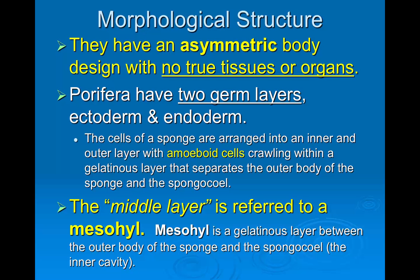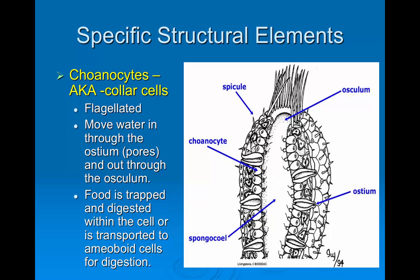The sponge body is asymmetrical, and they do not have true tissues or organs, but they do have two germ layers: the ectoderm and the endoderm. There is an inner and an outer layer, with amoeboid cells that crawl around. The middle layer is the mesohyl, a gelatinous layer between the outer body and the inner cavity, which is called the spongocoel.